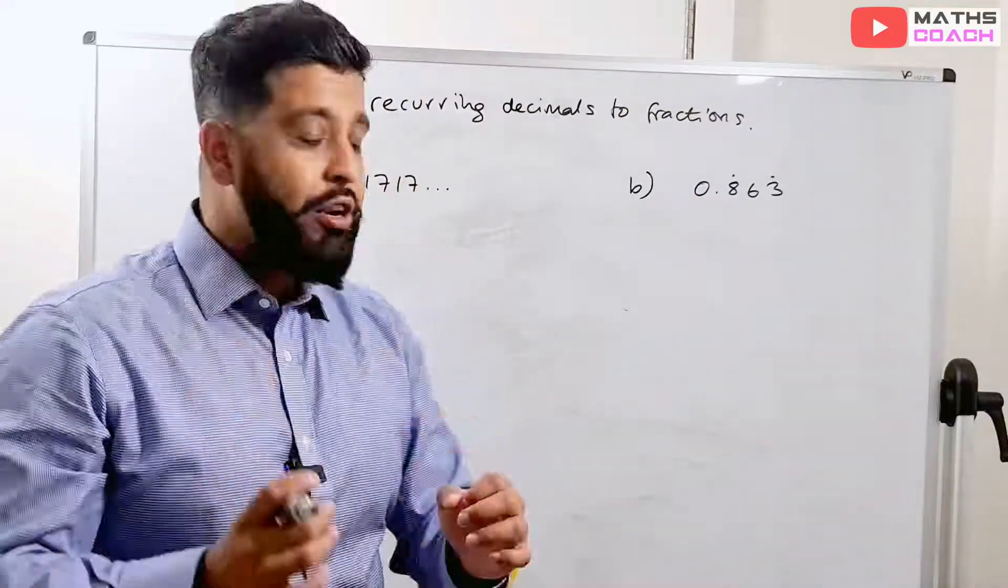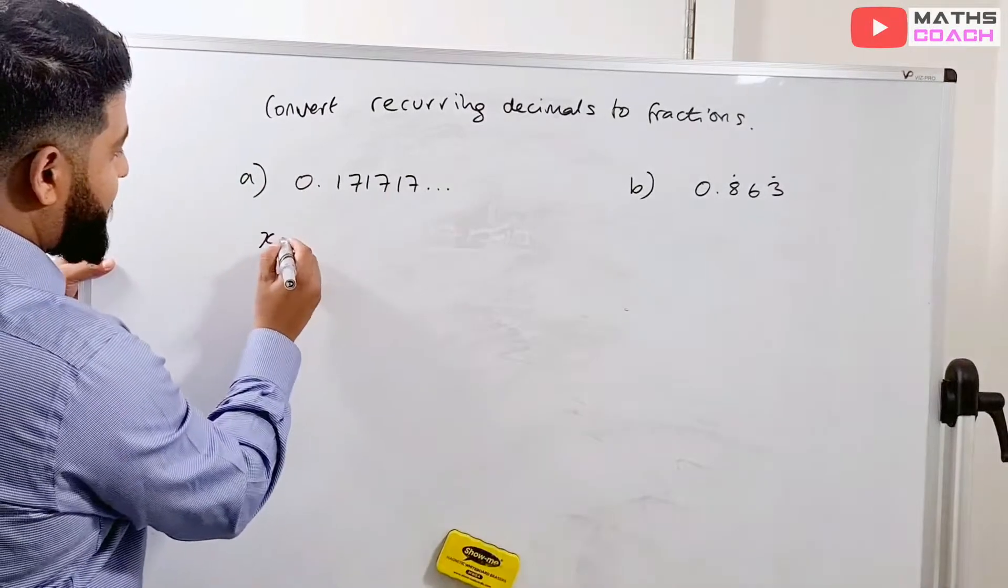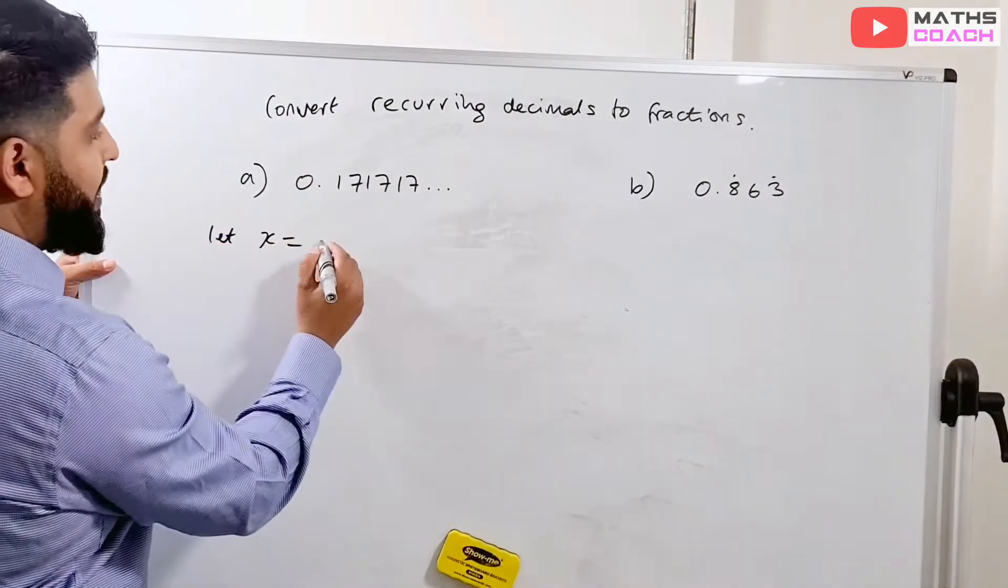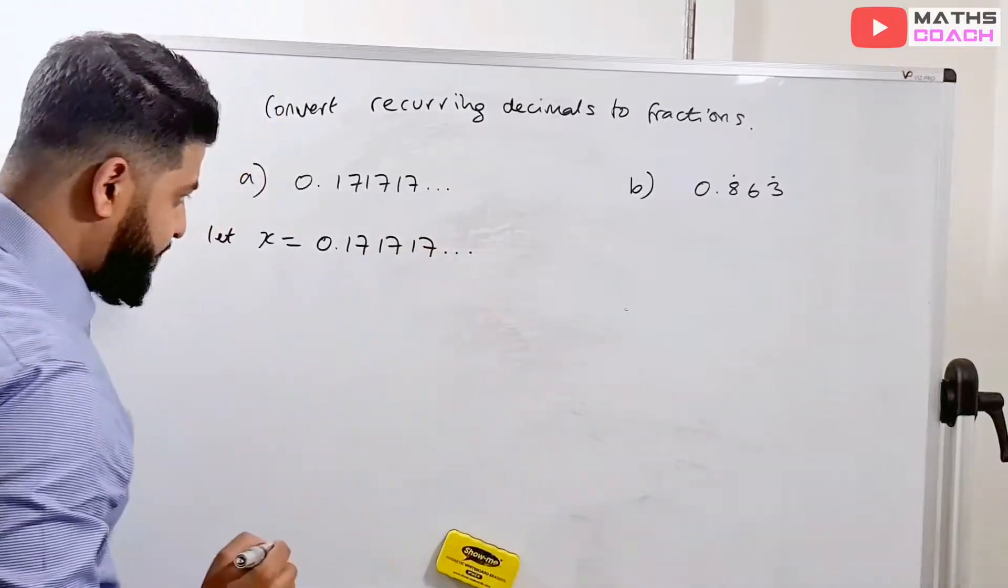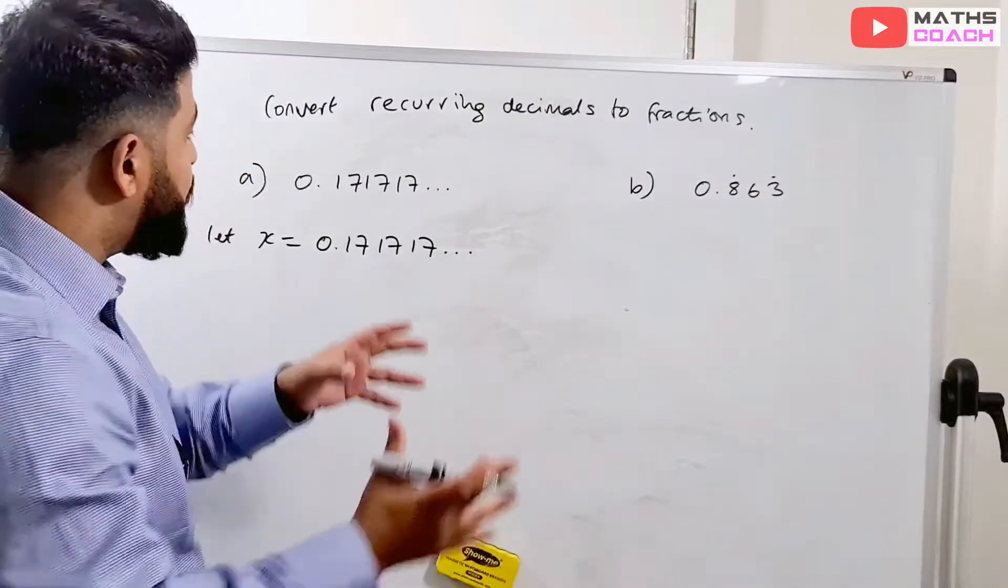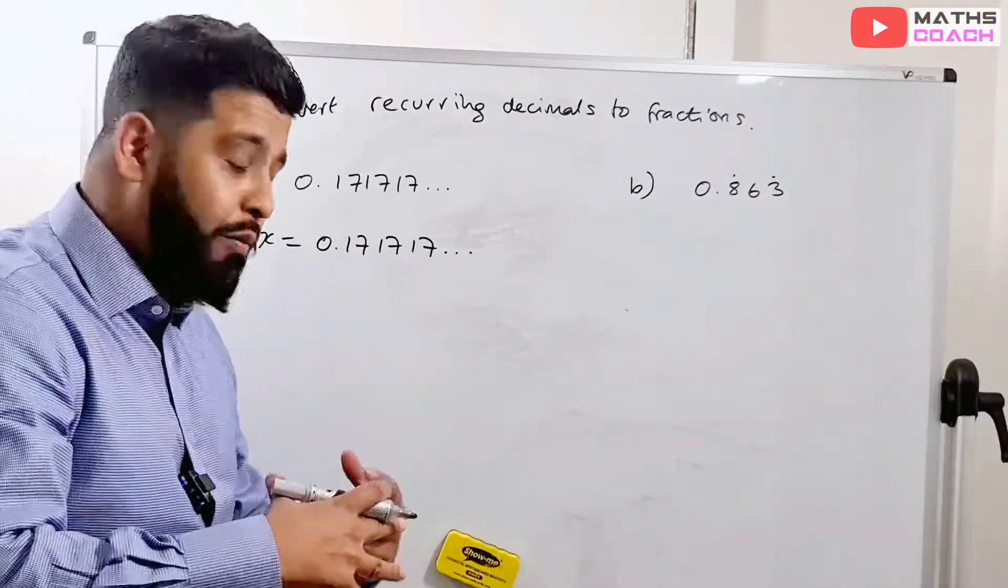So let's get straight into the first example here. You want to say, for example, let x equals 0.171717, like that. And you will now use this value of x to bring in another sort of form of this x.